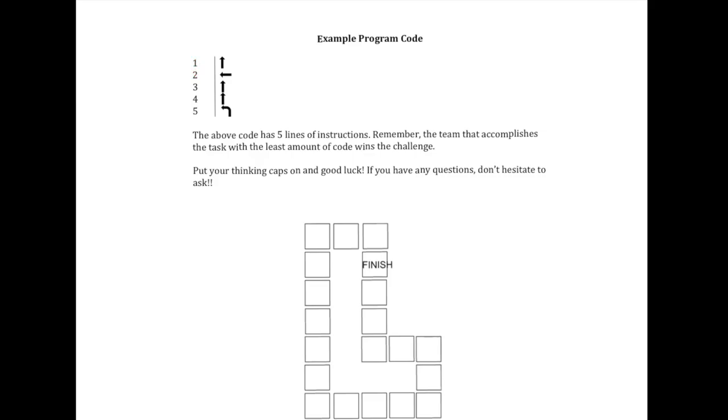And so on your piece of paper on the back of your handout there, you can number your lines of code, one through 20 if you have 20 lines of code. Now this is going to come into play if we have two or more teams that actually accomplish the programming challenge, and then we'll see which team has the least amount of code.